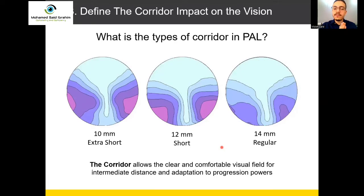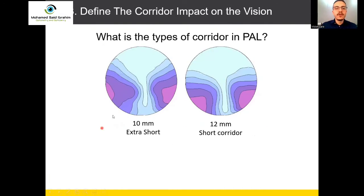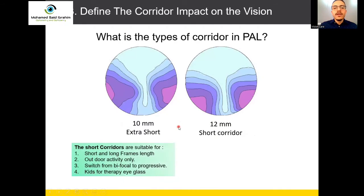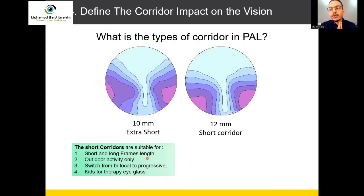The corridor is very important because it lets your customer see intermediate distance and also adapt to the progressive lens. The extra short and short corridors — 10mm and 12mm — are suitable for both short and long frames, so any frame a customer selects can be fitted with a short corridor.